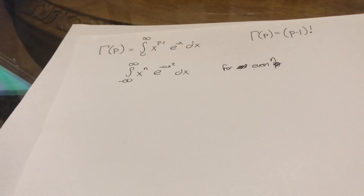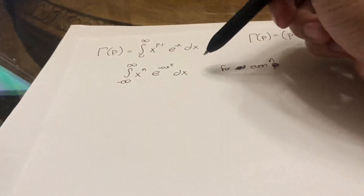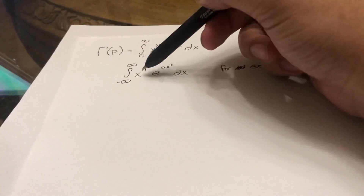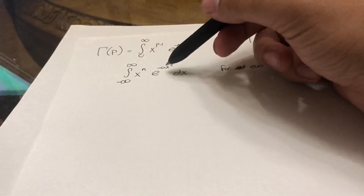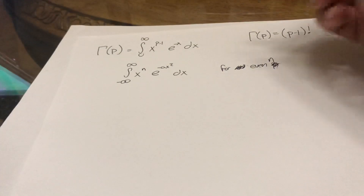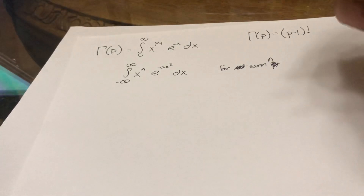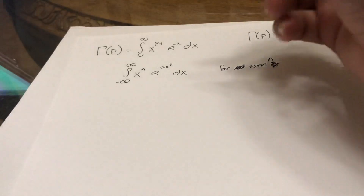Welcome to this video. I'm going to be showing how to solve the Gaussian integral. There are a lot of ways to solve the Gaussian integral, however we want to solve this form of the Gaussian integral, which is x to the n instead of just e to the negative ax squared. There's a very clever solution for just e to the ax squared, but I will be going for a more general solution.